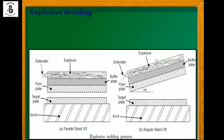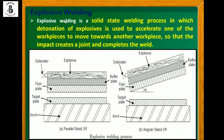Explosive welding is a solid state welding process in which the detonation of explosives is used to accelerate one workpiece — the flyer plate — towards another workpiece, so that the impact creates a joint and completes the weld. If both the target plate and flyer plate are parallel, that is known as a parallel standoff; if they are at some angle, it is known as an angular standoff.